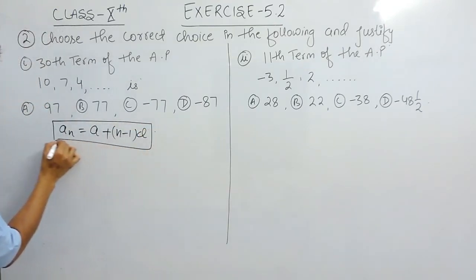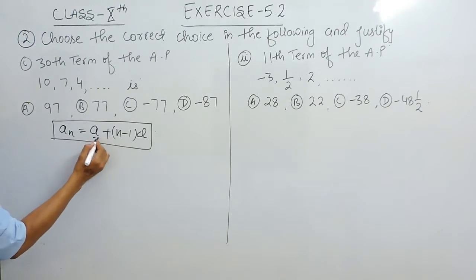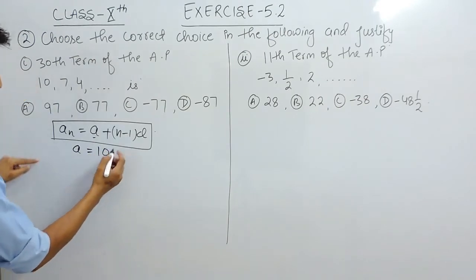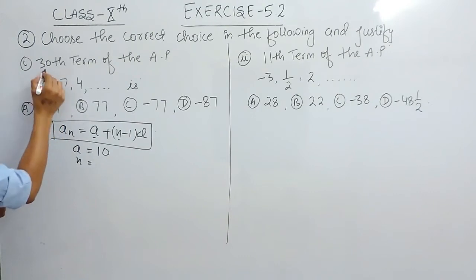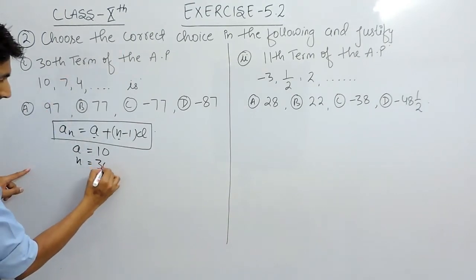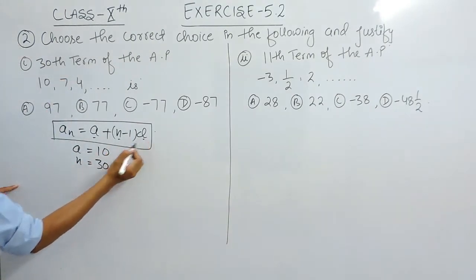So we can use this formula to find the 30th term of this AP. For that, we would be requiring a, which is the first term—here it is 10—n, which is the number of terms you have to find, which is 30 in this case, and you have to find d.